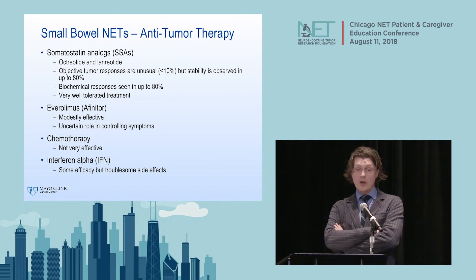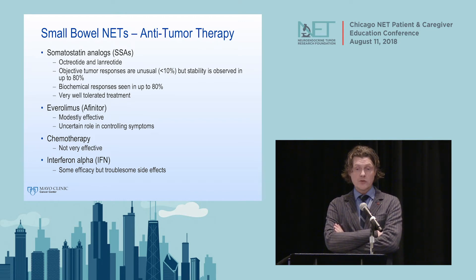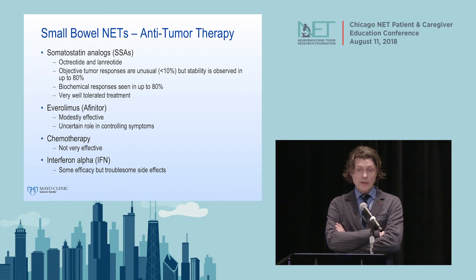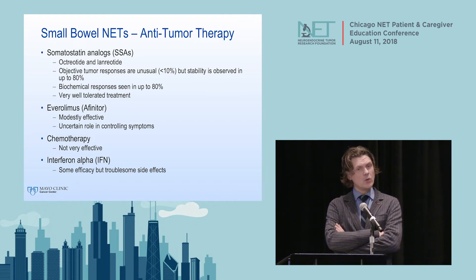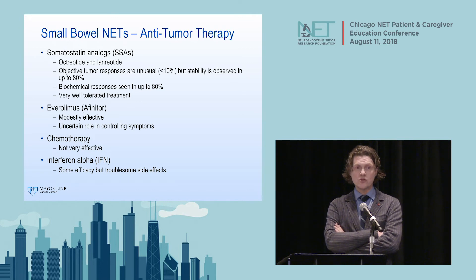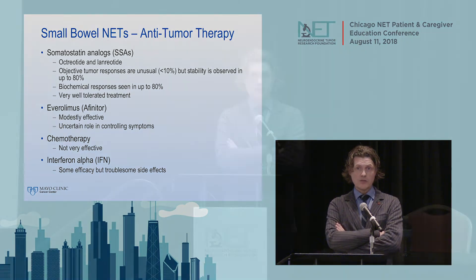For small bowel NETs today, somatostatin analogs—octreotide or lanreotide—are the most commonly used options. Tumors generally don't shrink much, but we can stabilize them so they don't grow. They are incredibly well tolerated and very effective in controlling symptoms. Everolimus is modestly effective and works for many patients. Chemotherapy for small bowel tumors generally does not work—there are exceptions, but it is broadly very ineffective. Interferon alpha has been around for a long time but has many side effects and is generally not used.